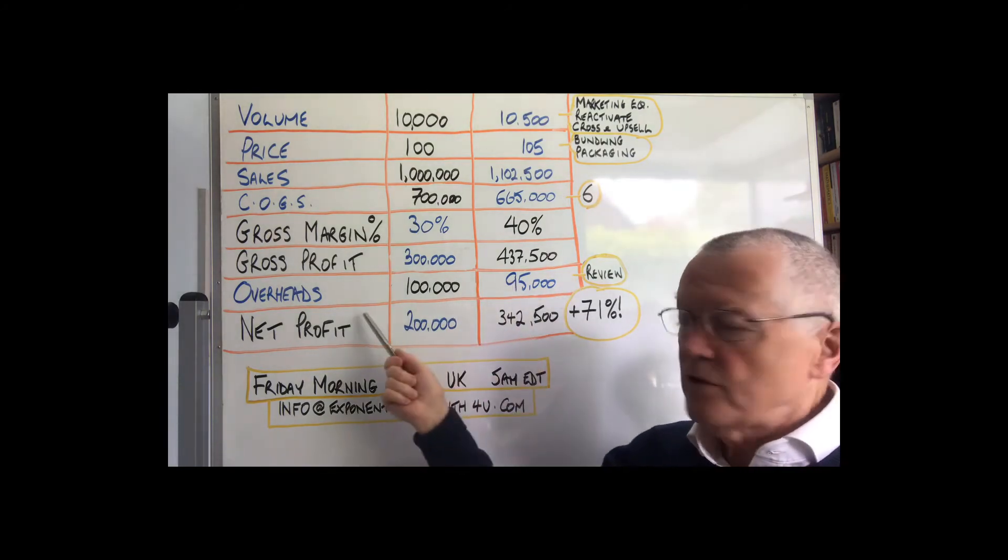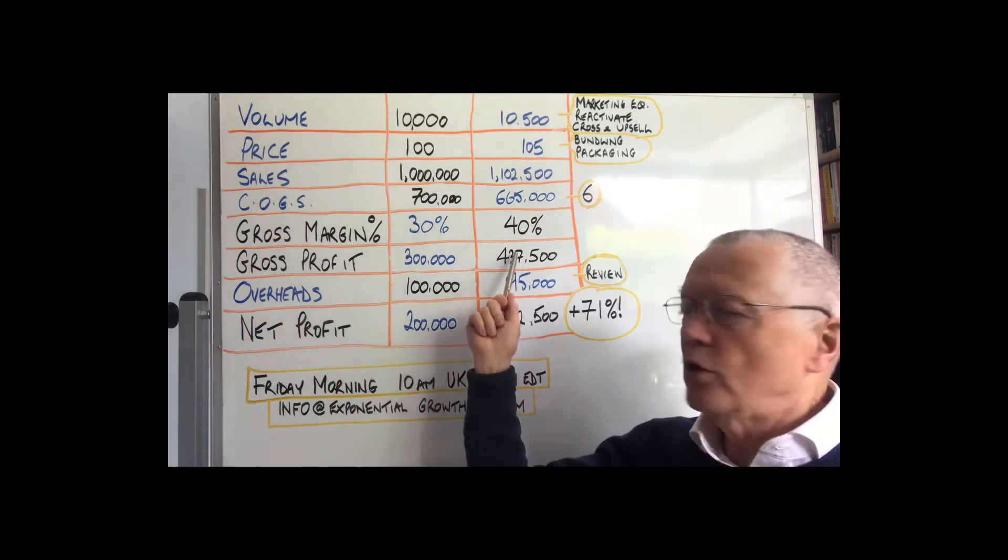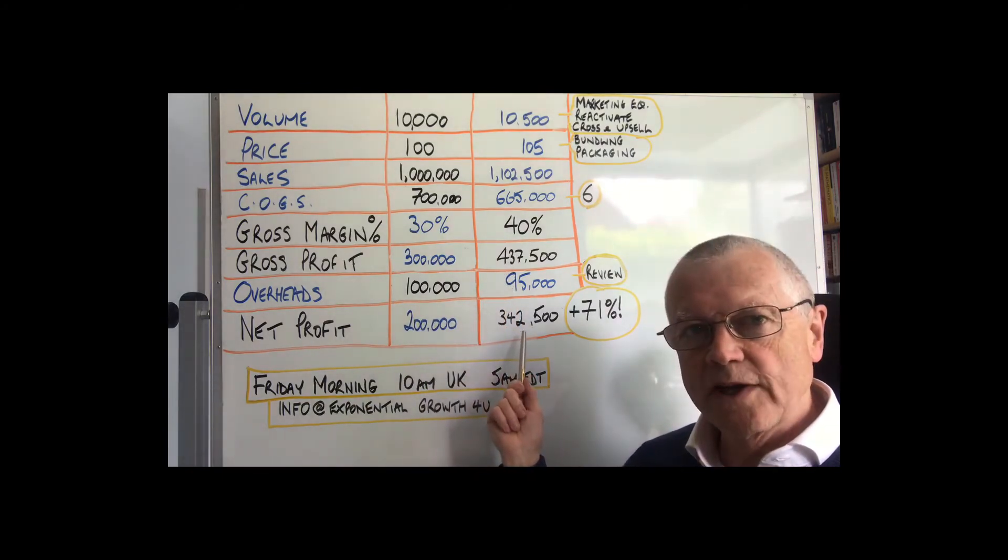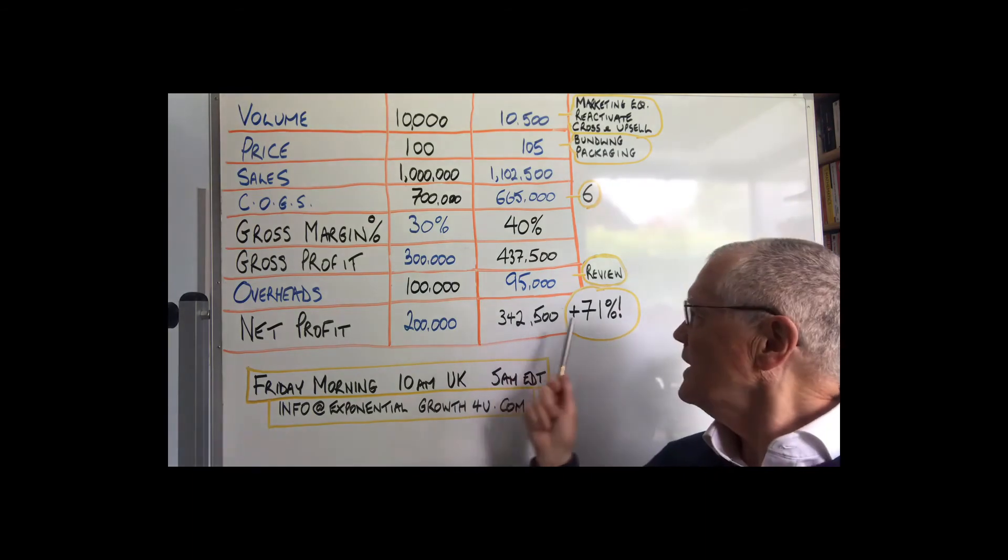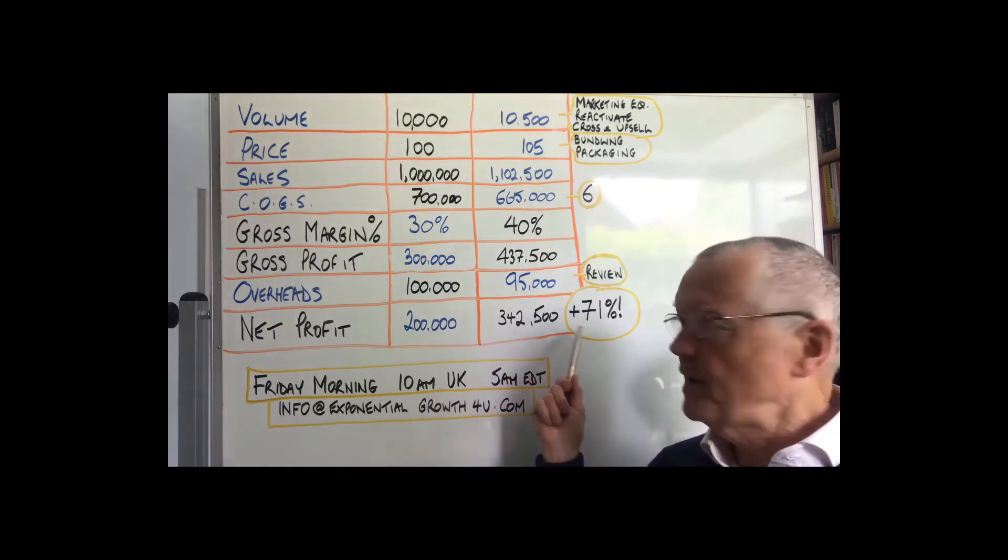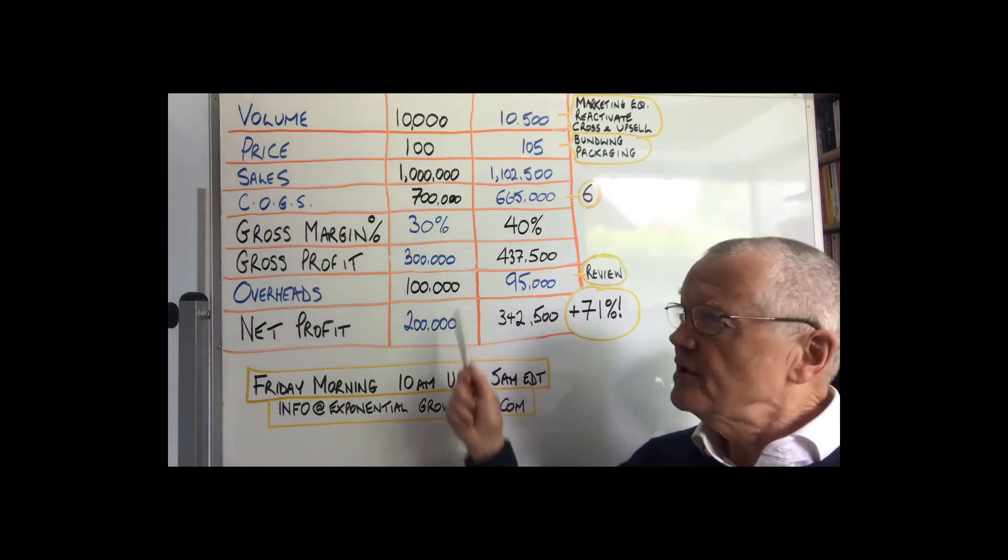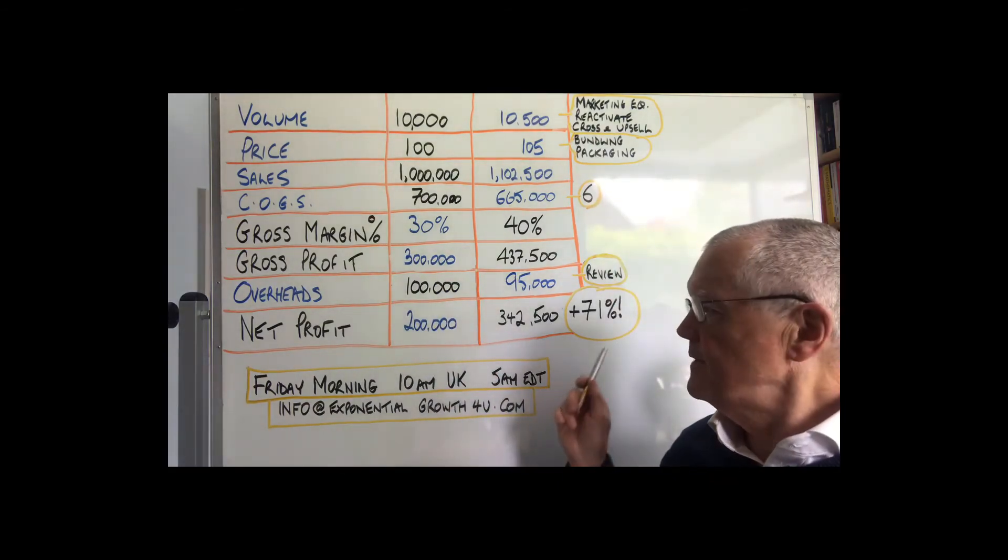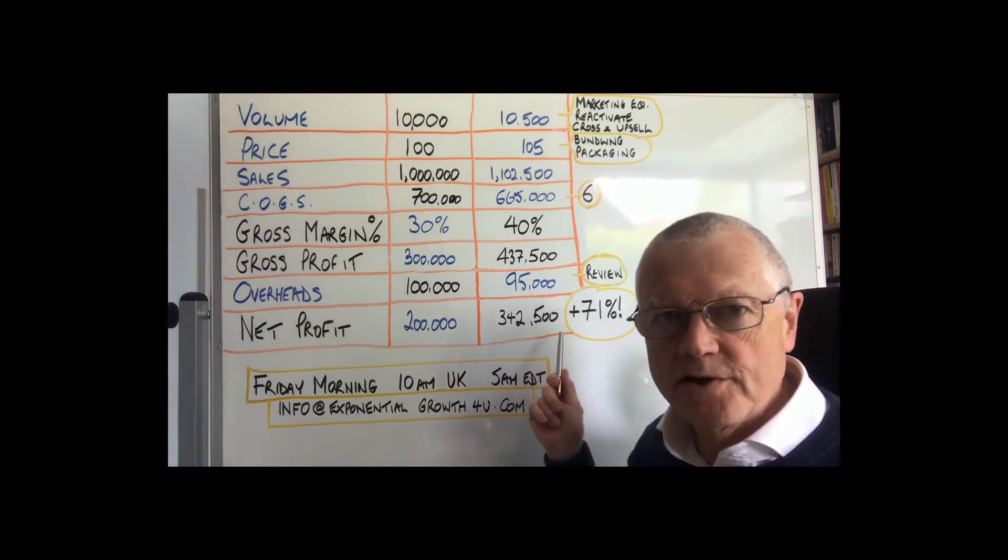You've now got a net profit of 437,500 minus 95,000 which is 342,500. Now that is over 70% higher than our starting profit. So just those four small 5% improvements have made over 70% difference, 70% improvement on our bottom line.